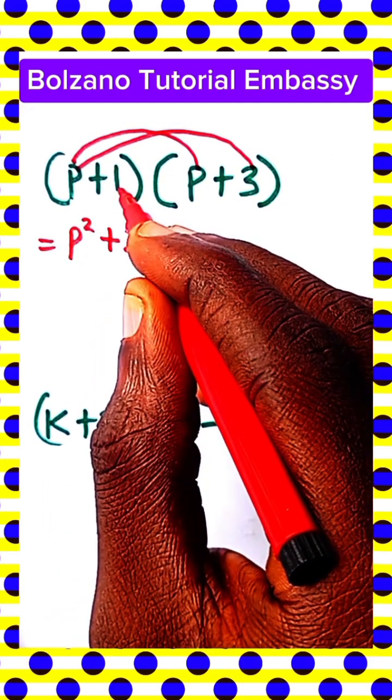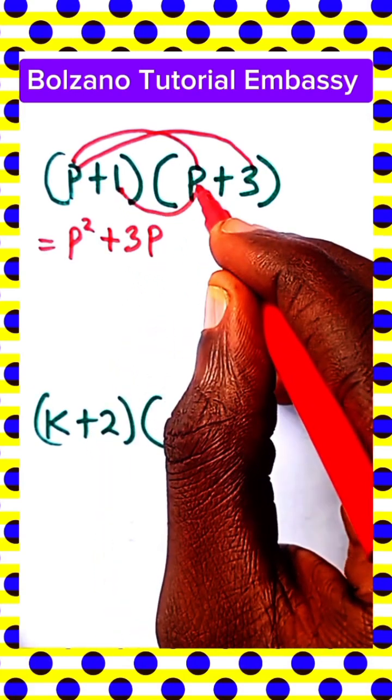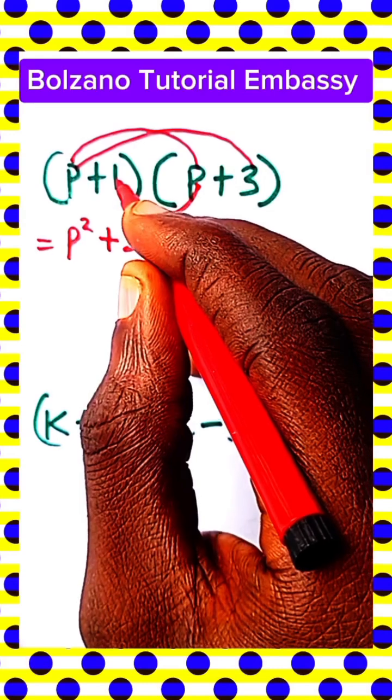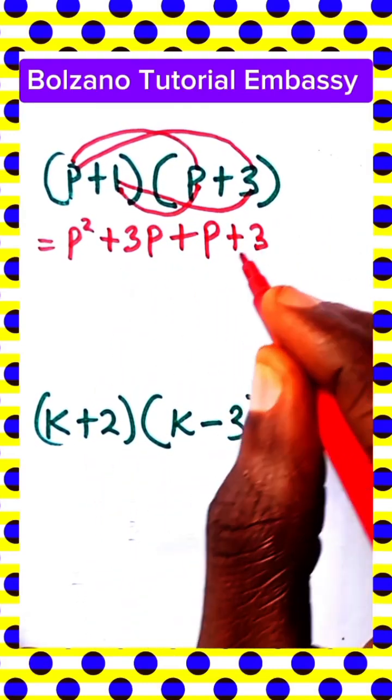Then we use the next term, 1 times P that is equal to P, and 1 times 3 is equal to 3.